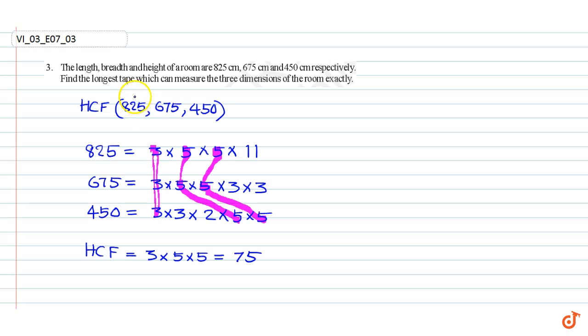Therefore, the longest tape which can measure the three dimensions of the room exactly is 75 cm. That is our answer.